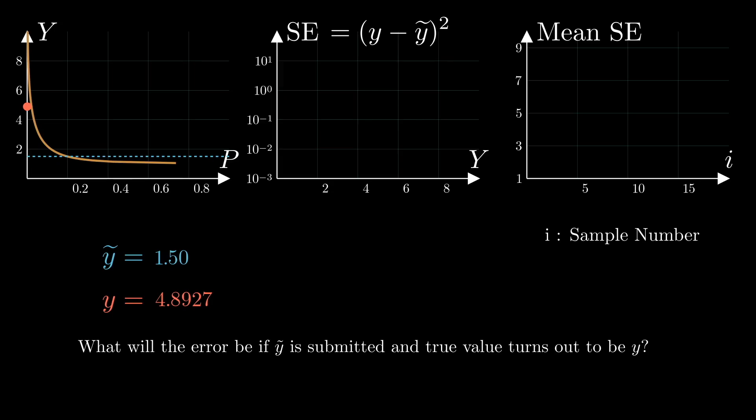While we are sampling more points and calculating the error for each, we will also keep track of the average error of the points sampled so far in the right plot. We will keep sampling more points until we reach a point where sampling further points does not change the average error. Let's see how this works.